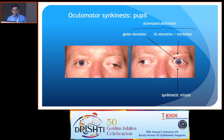The last patient I saw in the UK had a third nerve palsy and was gradually recovering — you can see the lid is opening up slightly. When asked to look to his right side, there is lid retraction and miosis. This is what people sometimes call a pseudo-Argyll Robertson pupil, and it represents oculomotor synkinesis.